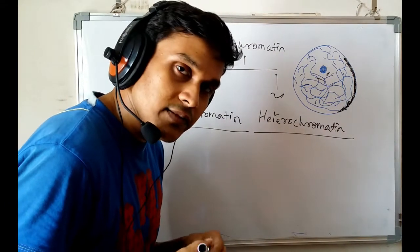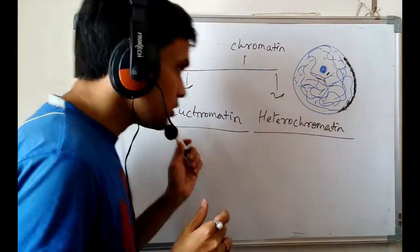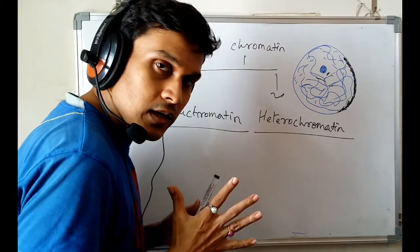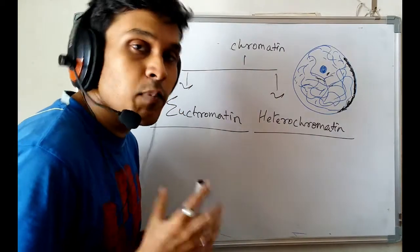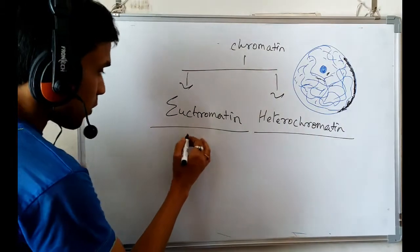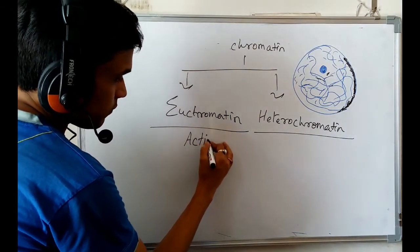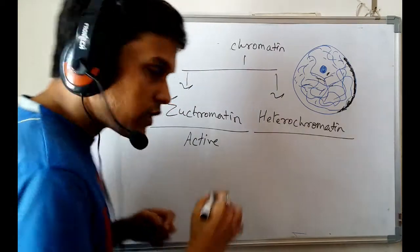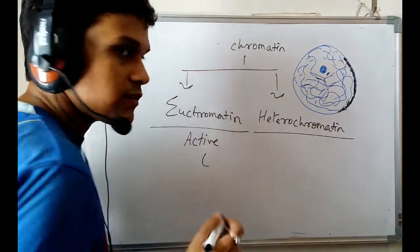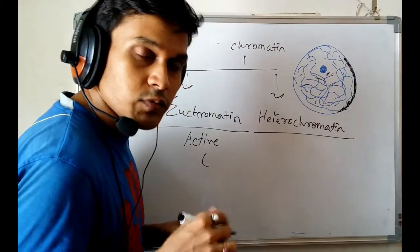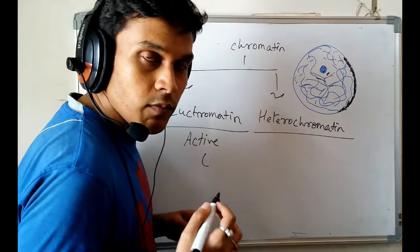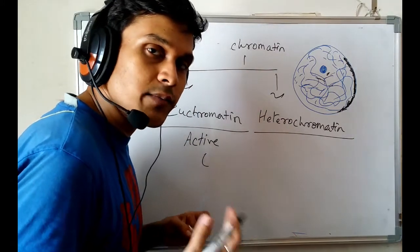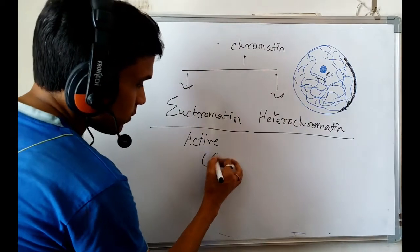Euchromatin is the part of the chromosome or the part of the DNA which is actually the active part. It is the active part of DNA — mostly the genic part. The gene is the active side of the DNA which produces a functional molecule for our body, like any RNA structure or any protein.